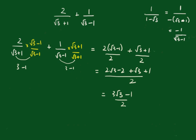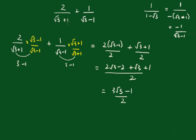And I think that's probably the preferred method. Now I'll just show you the other way. You can put over a common denominator of root 3 plus 1 times root 3 minus 1. Which means you need to multiply this one by root 3 minus 1. So that would be 2 outside of root 3 minus 1.